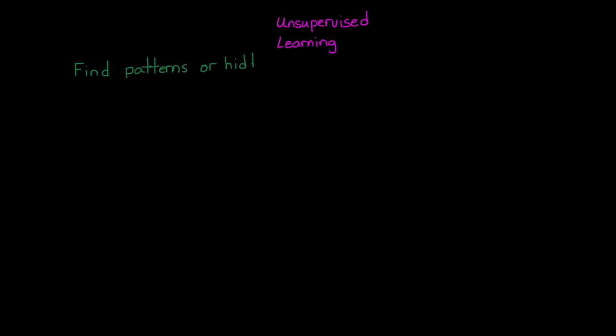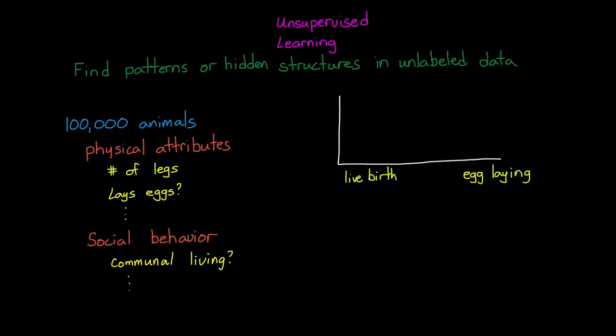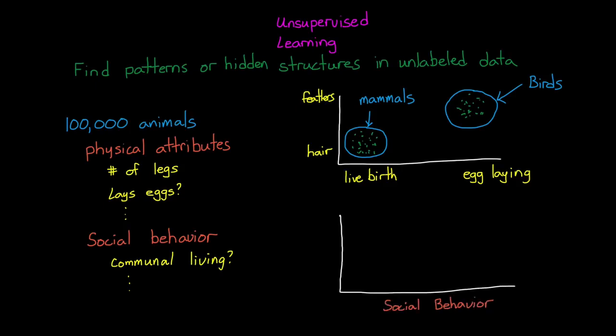Unsupervised learning is used to find patterns, or hidden structures in datasets that have not been categorized or labeled. For example, imagine you collected information on 100,000 animals, like a bunch of physical attributes and social tendencies. Then you can use unsupervised learning to group the animals, or cluster them into similar features. This could be something obvious like grouping them into mammals and birds, or to group them by patterns that might not be as obvious, like finding correlations between physical traits and social behaviors that you didn't know about ahead of time.